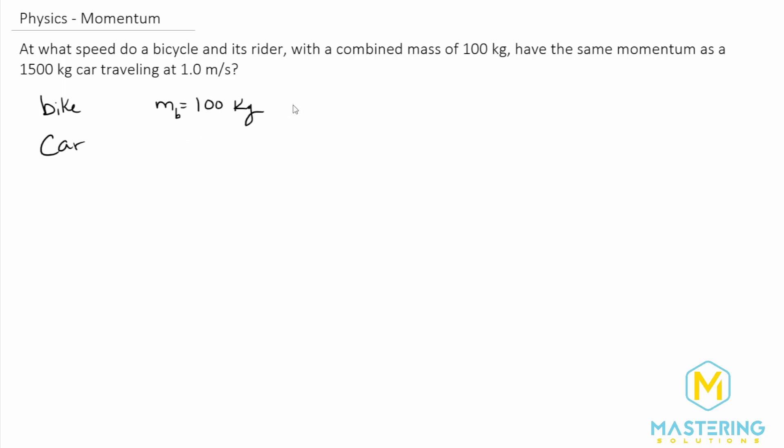And then the velocity for the bike, v sub b, we don't know that, and that's actually what we're trying to look for. So for the car, they tell us the mass of the car is equal to 1500 kilograms, and then the velocity of the car is 1 meters per second. So everything is already in SI units.